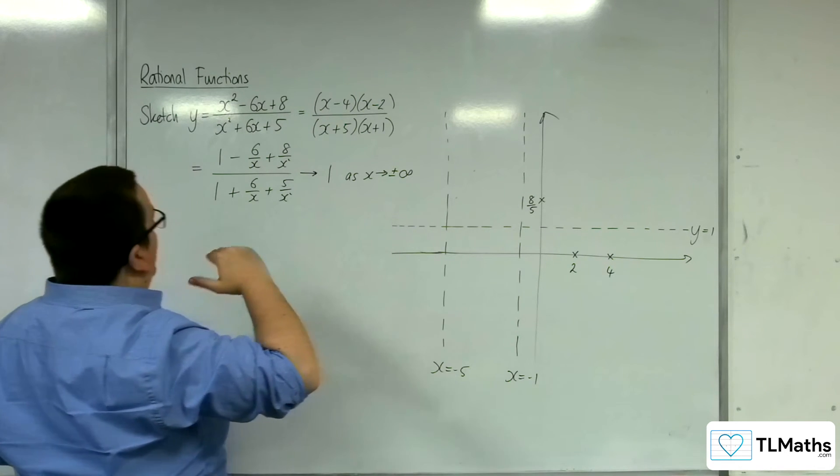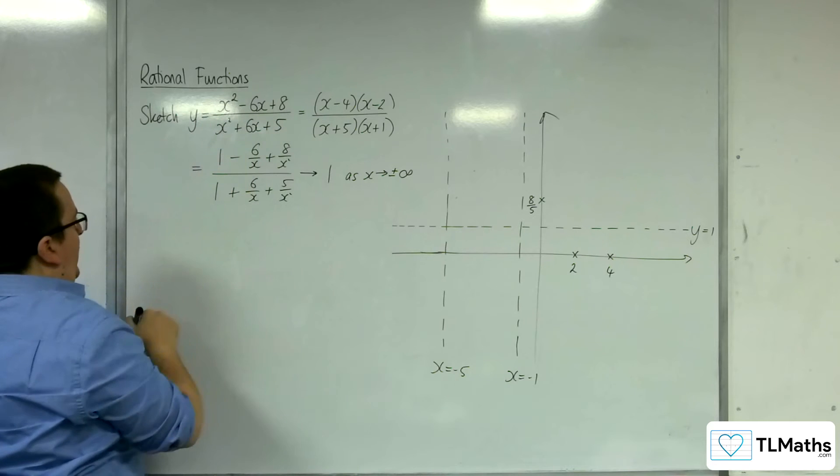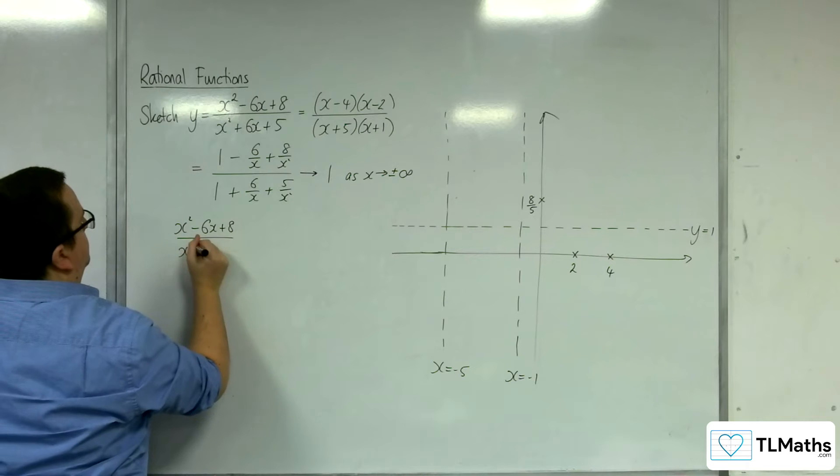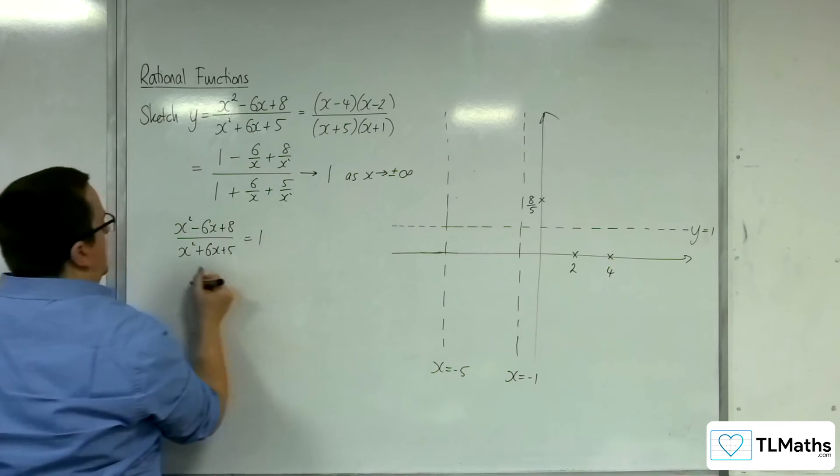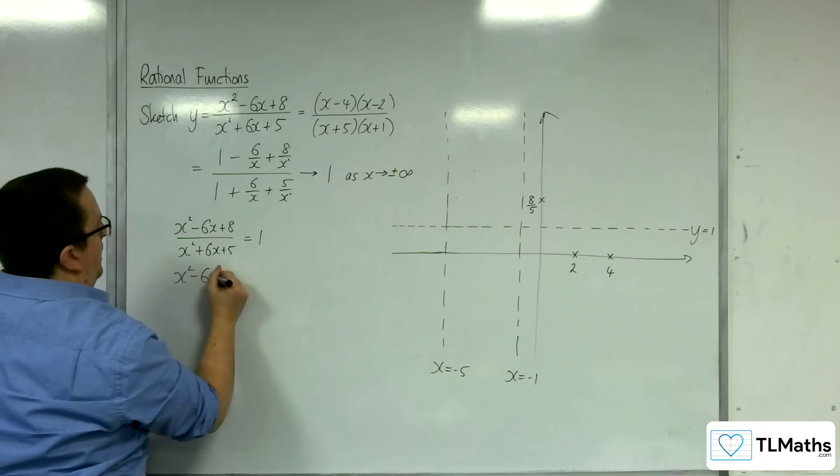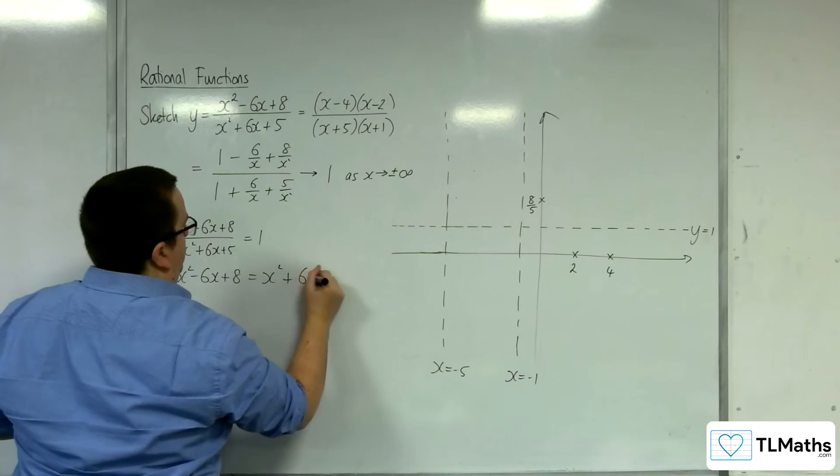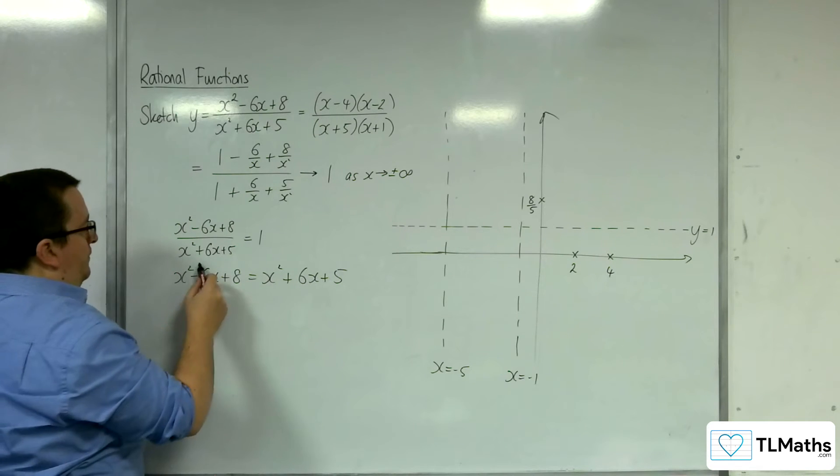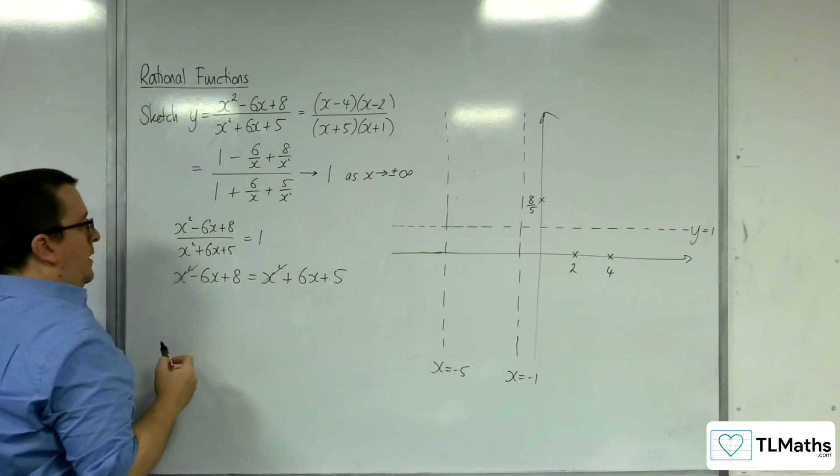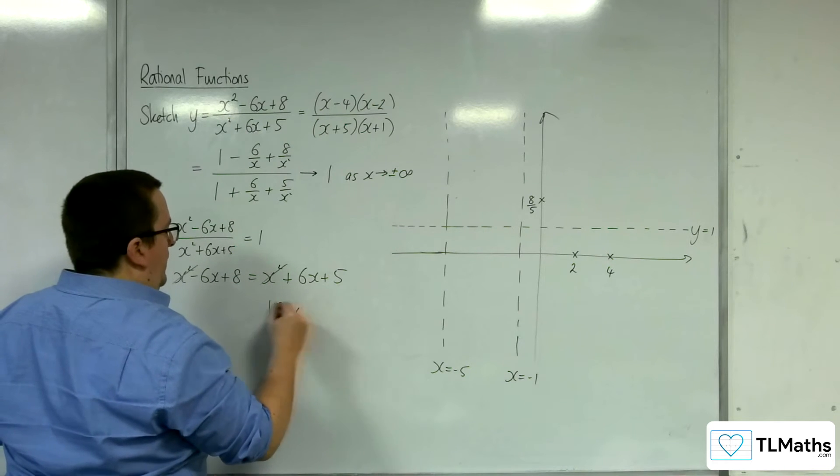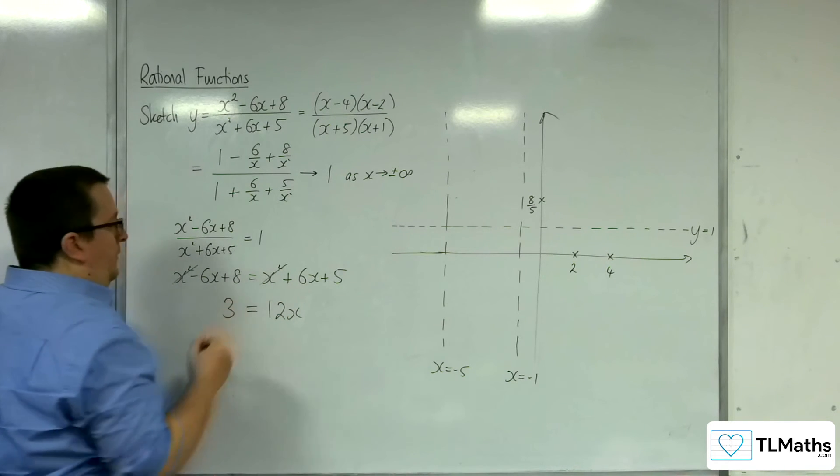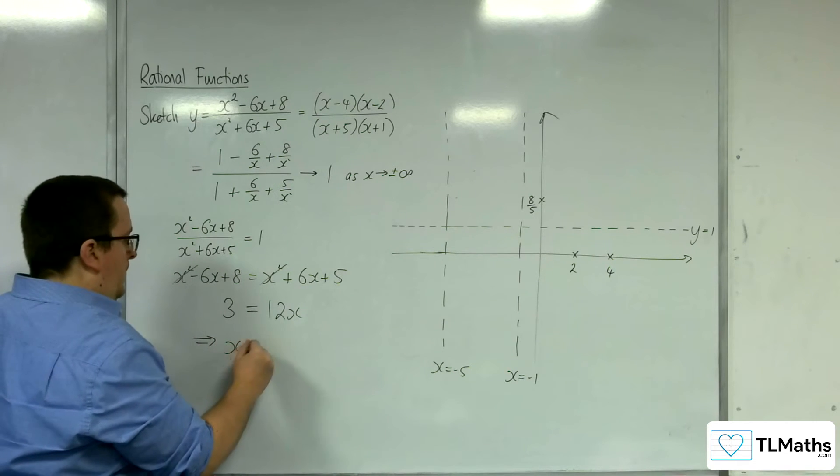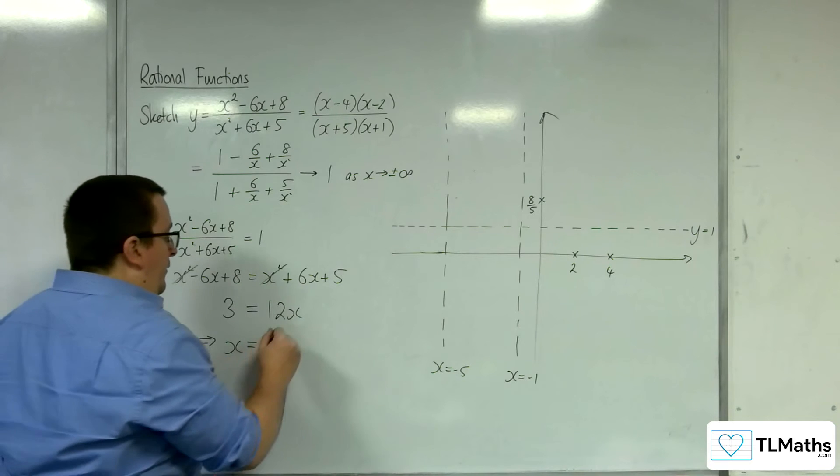So the horizontal asymptote is y equals 1, so I put this equal to 1. Multiply up. So I can subtract x squared from both sides, I can add 6x to both sides and subtract 5 from both sides, and then divide through by 12. So x is going to be 3 twelfths, which is 1 quarter.